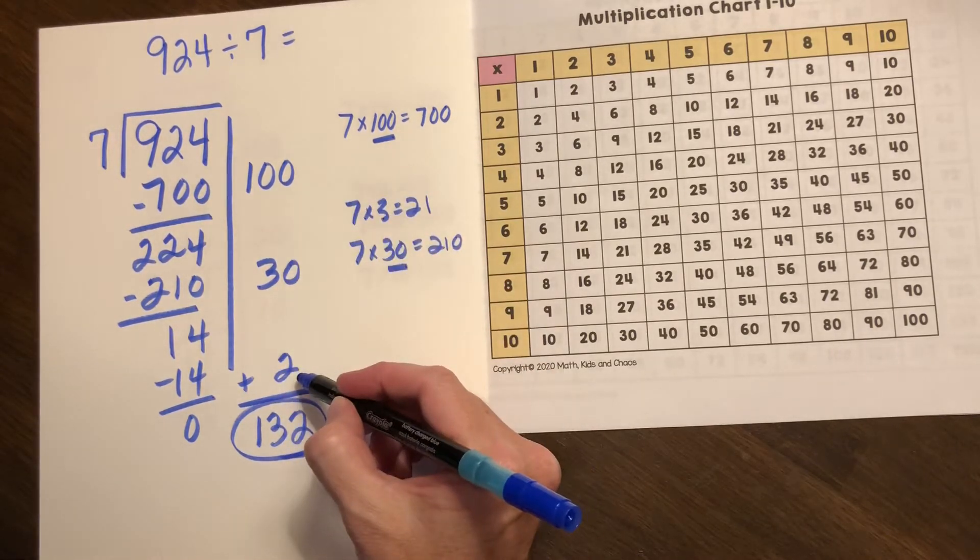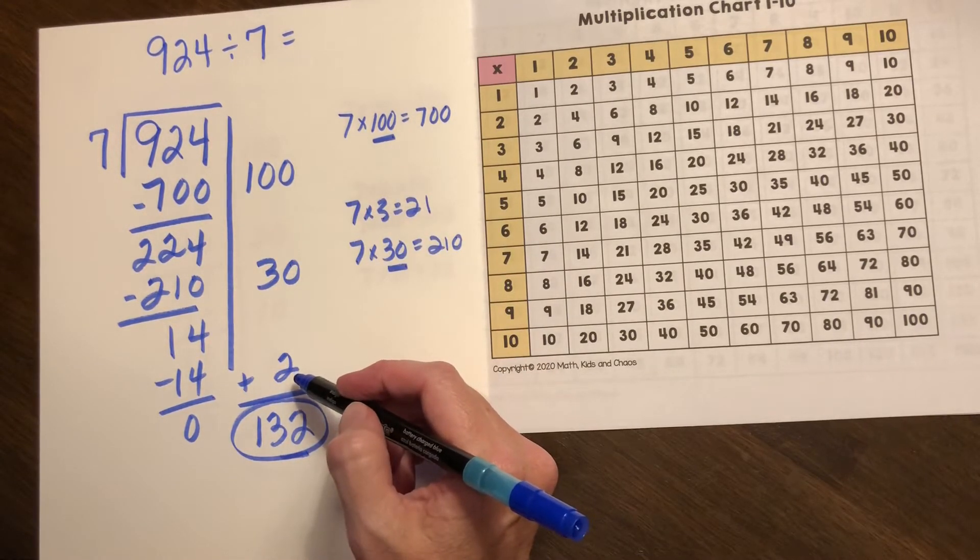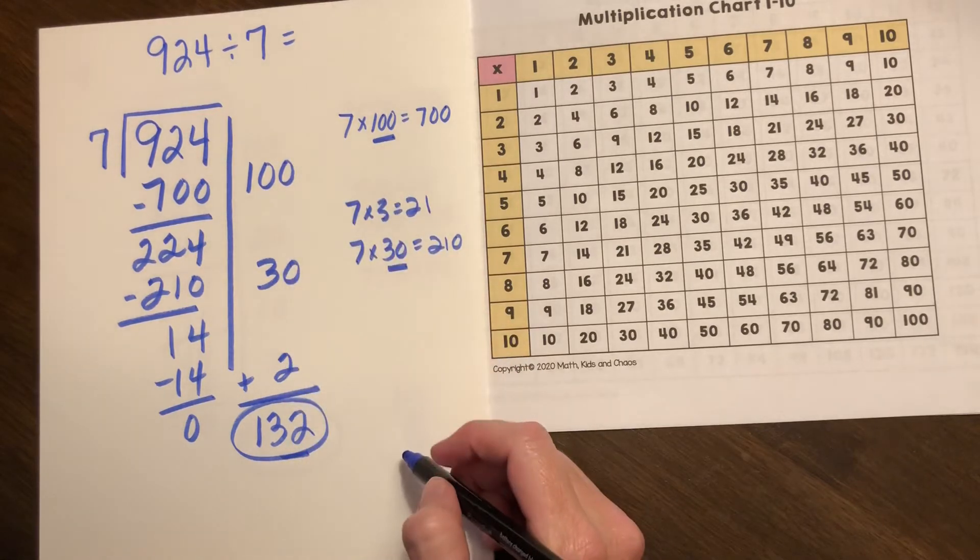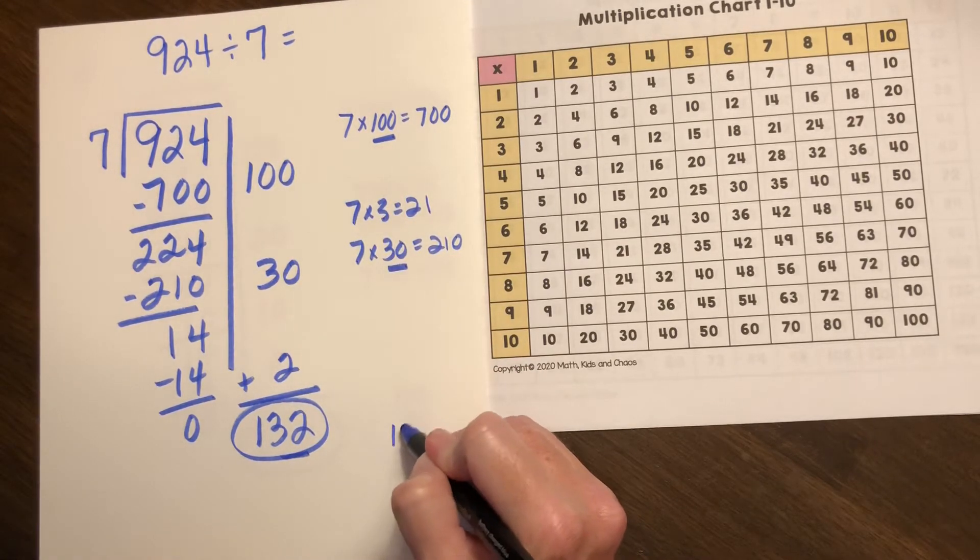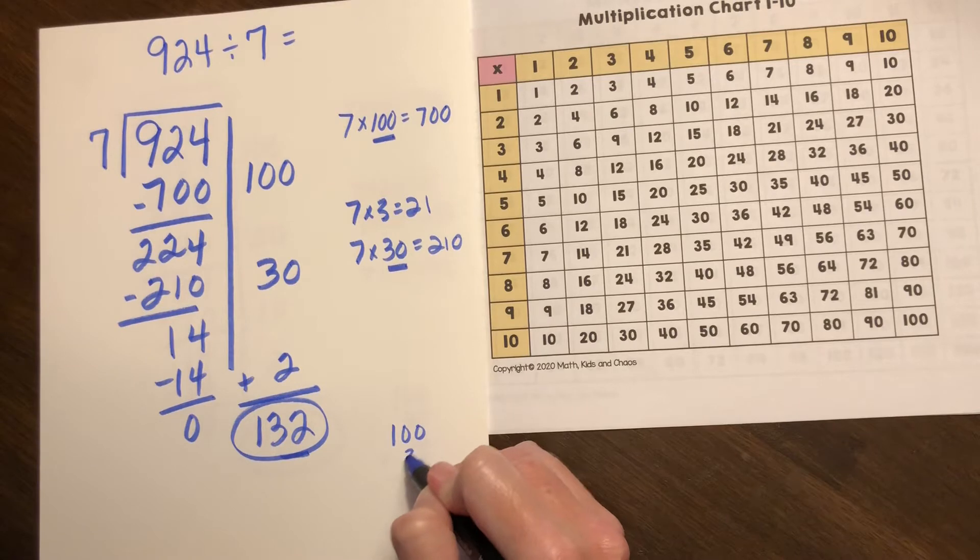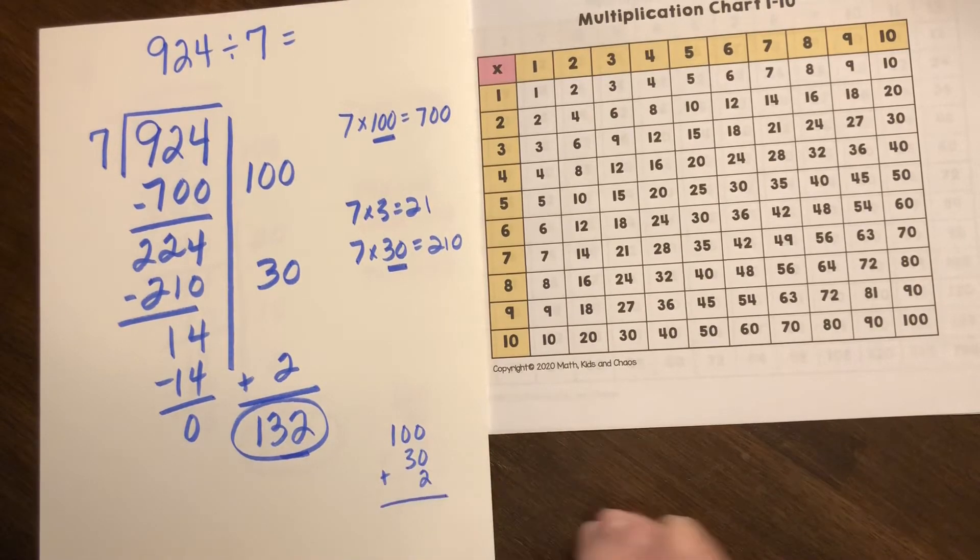So this is neat and organized. Sometimes if you are adding or you have more numbers it could be beneficial to rewrite your partial quotients to make sure that your place values are lined up to double check that your addition is correct.